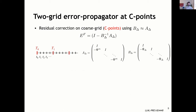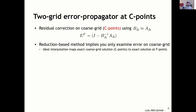MGRIT is a residual correction scheme at the coarse grid — at the C points. The key approximation is that B_delta approximates A_delta from the previous slide. The iteration operator E^F (superscript F for F-relaxation) is a simple residual correction scheme: I minus B_delta^{-1} A_delta. Because this is a reduction-based method, we only examine the error on the coarse grid. Ideal interpolation maps an exact coarse grid solution at C points to exact solutions at F points by injecting and then time-stepping to fill in values.